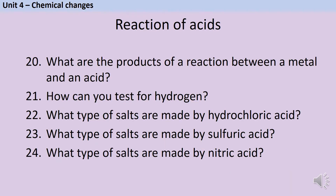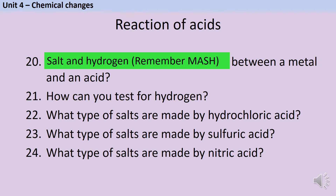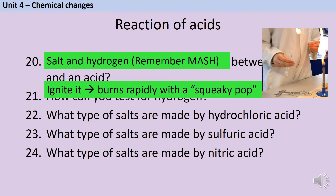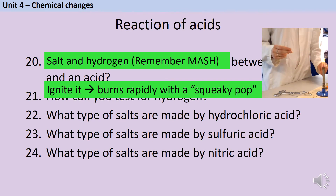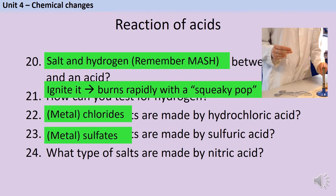When a metal reacts with an acid, it produces a salt and hydrogen — you can remember this using the acronym MASH. You can show that the gas is hydrogen by igniting it, which will burn rapidly with a squeaky pop sound. When hydrochloric acid forms salts, these are chloride salts or metal chlorides. Sulfuric acid produces sulfate salts, and nitric acid produces nitrate salts.